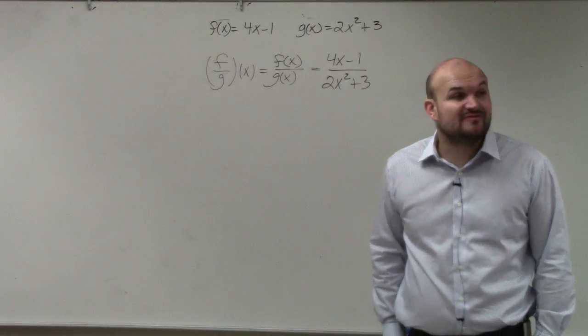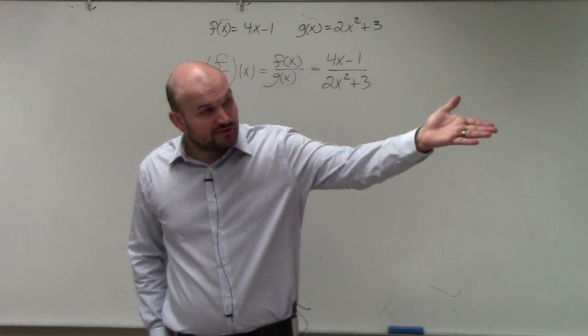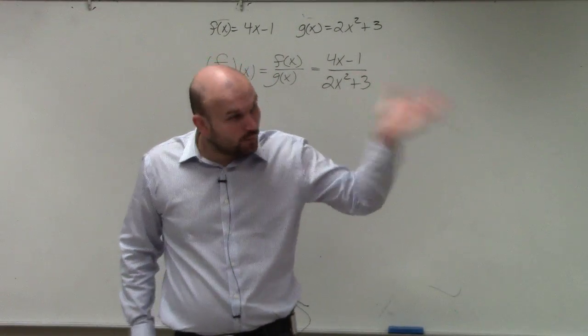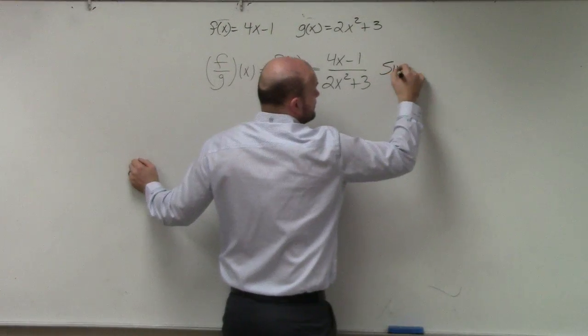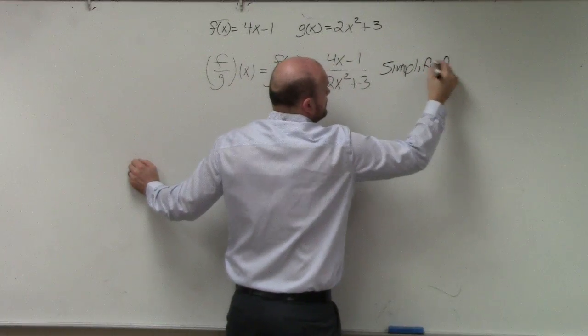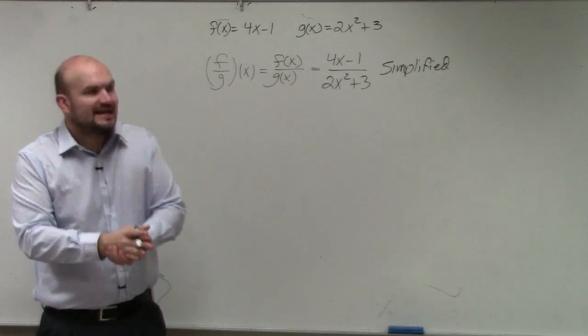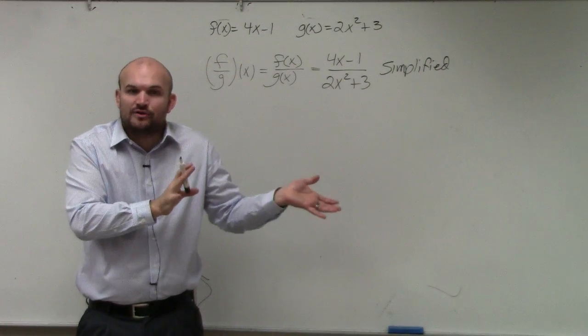However, they are asking us to find the domain. If you remember, the next thing we wrote down for the domain was the restrictions. So therefore, this is simplified. You can't do anything with this. I always look to factor, always look to simplify it, but we can't simplify this any further.